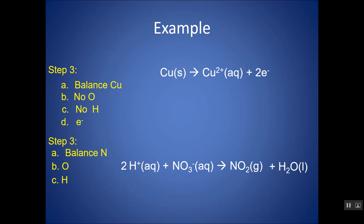The last step is to balance charge with electrons, and it makes sense to leave charge for the end since introducing H⁺ changes the charge as we go. On the left I have two H⁺ (2+) and one NO3⁻ (1−), giving a total charge of 1+. On the right the charge is zero. So I add one electron to the left-hand side, making the charges match at zero on both sides.